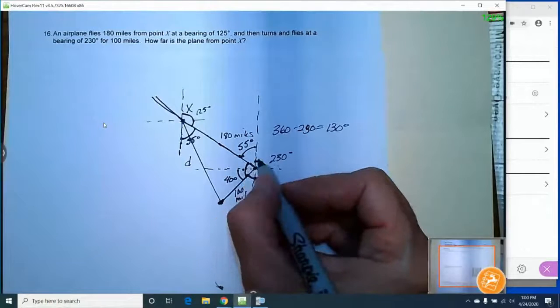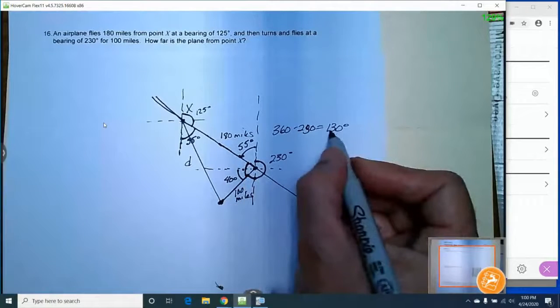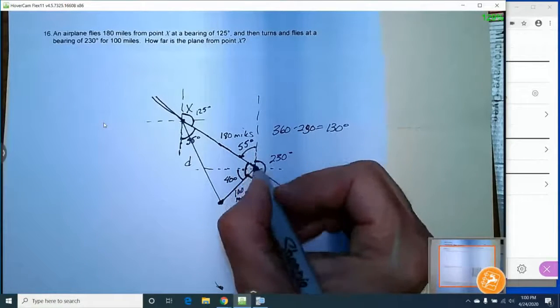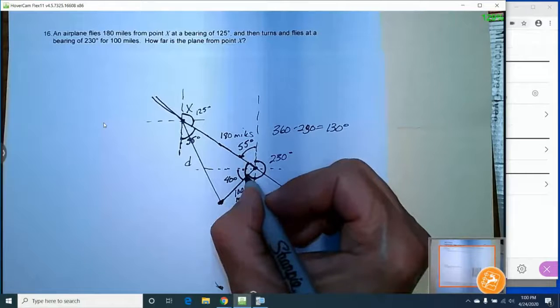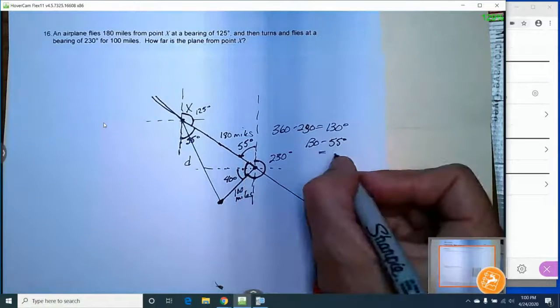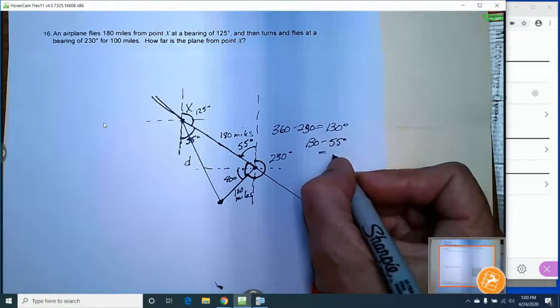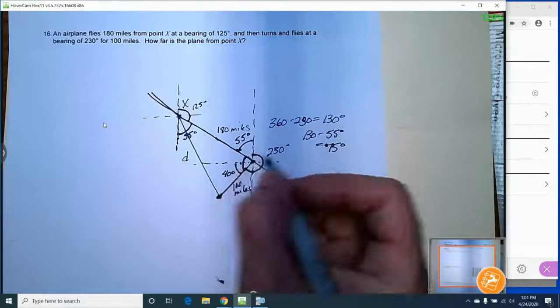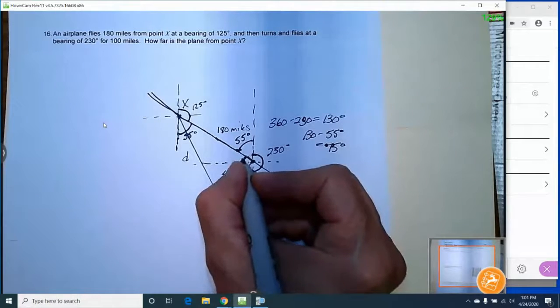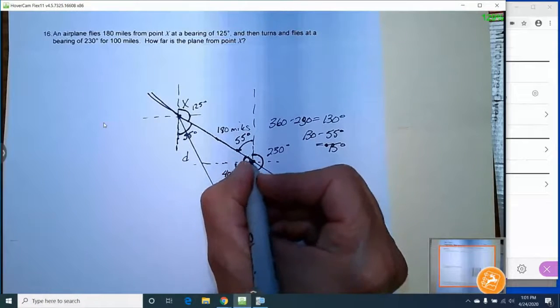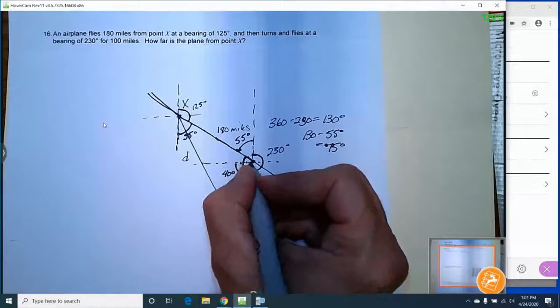And actually what we're trying to do is find this little angle in here. So really all we need to do is take 130 and subtract 55 and then this will give us that entire angle. Okay, so that's going to give us 75 degrees. So that's the angle that's in here. That's one of the angles of our triangle.